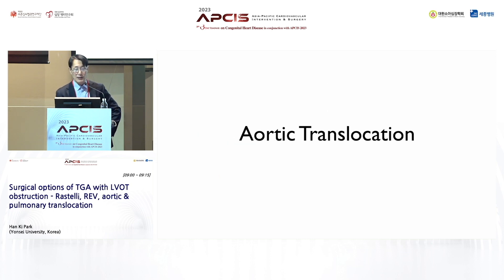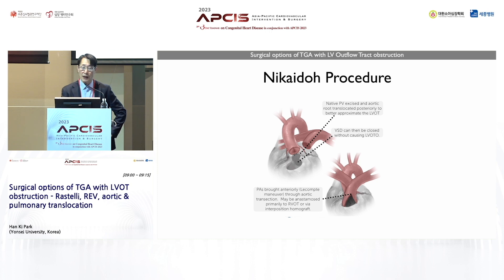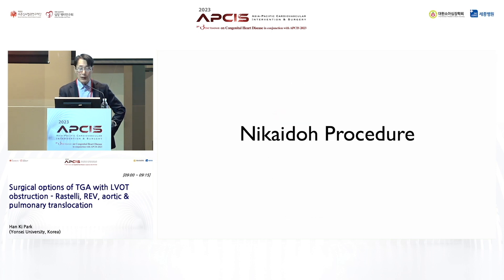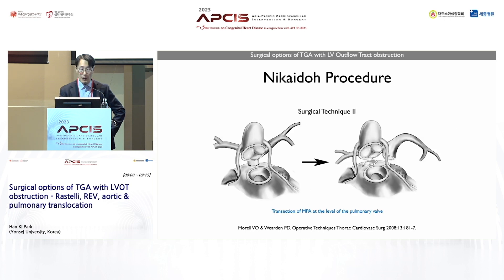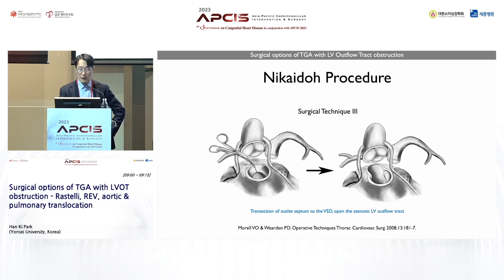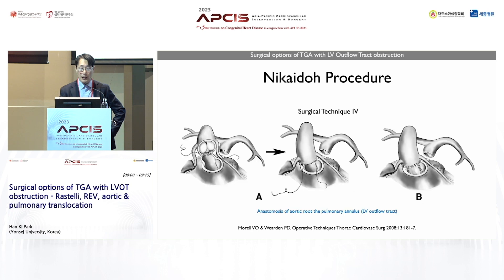Aortic translocation has been proposed, and Dr. Nikaido suggested a brilliant idea to move the aortic root to the LV outflow tract. In the Nikaido procedure, the proximal segments of the coronary arteries are mobilized and the aortic root is harvested from the RV. The main pulmonary artery is transected at the level of the pulmonary valve, and the aortic root is inserted into the VSD so that we can open the stenotic LV outflow tract. The aortic root is then transposed posteriorly to the LV outflow tract, and the VSD is closed.